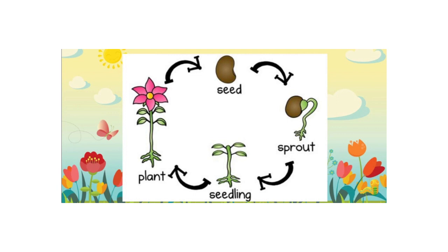First, we have a seed. Where do we put the seed? We put the seed in the soil and then we water it. After that, the seed grows and becomes a sprout. We call this a sprout.